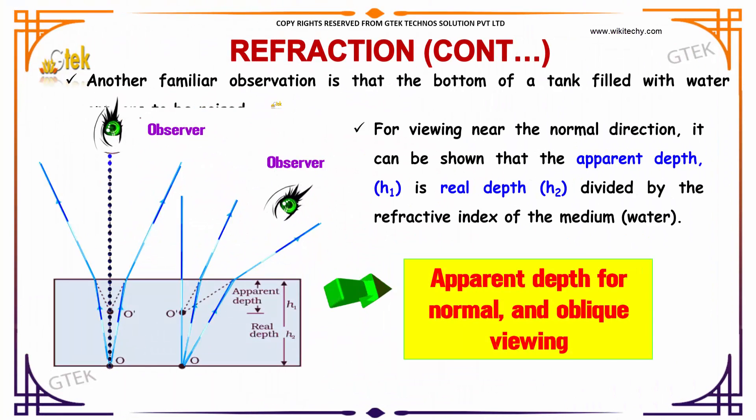Another familiar observation is the bottom of a tank filled with water. For viewing in the normal direction, it can be shown that the apparent depth H1 is the real depth H2 divided by the refractive index of the medium water.